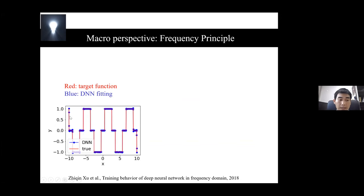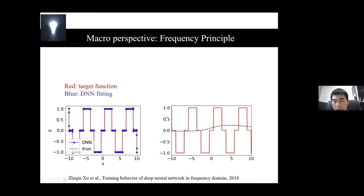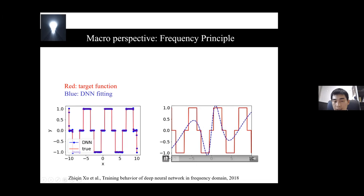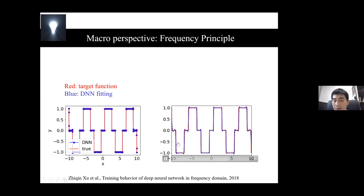Suppose we fit a target function (the red curve) with training data (blue points). After training, the deep neural network fits the target function well. Watching the training dynamics: the network first captures the overall landscape, then details gradually emerge until it converges to the target. So the deep neural network captures low-frequency structure first, and then progressively more detail.